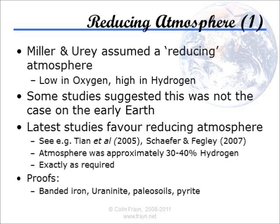Some of the evidence in favour of a reducing early atmosphere: First, banded iron formations are found abundantly in rocks around 2.3 to 2.4 billion years ago, occasionally before this time and for a while after, but then very rarely after that. Banded iron formations are formed by incompletely oxidised iron deposits, which can be used as a marker for a low oxygen concentration in the atmosphere. It seems likely that photosynthetic unicellular life started creating oxygen in the oceans sometime before about 2.5 billion years ago, causing the iron in the oceans to precipitate out and form into layers. Once the oxygen levels were high enough and substantial amounts of iron had been removed from the oceans, the process stopped.